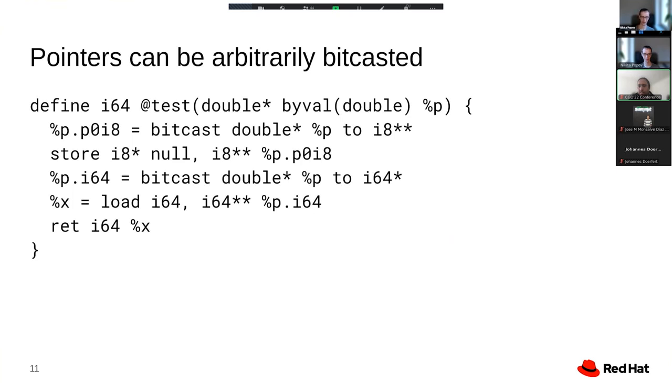We accept a pointer to double as an argument, then we bit cast it into a pointer to pointer, store null pointer, and then we load from a pointer to integer. In this code, there are a lot of types, but only three types that have semantic relevance. One is the byval type, because byval means we perform an implicit stack copy. To do a stack copy, we need to know how many bytes we're supposed to copy.